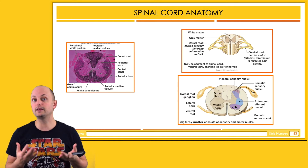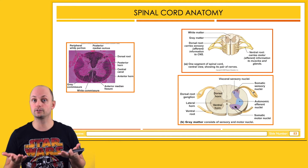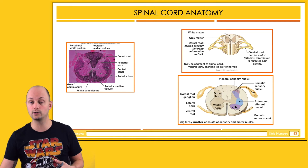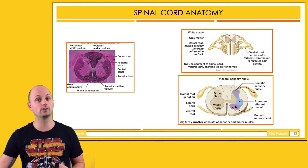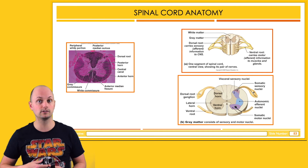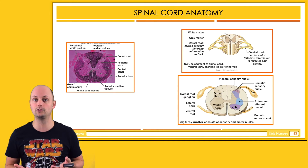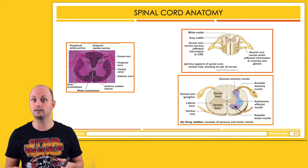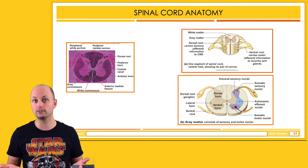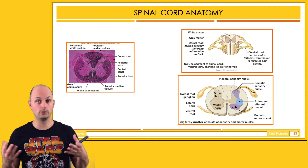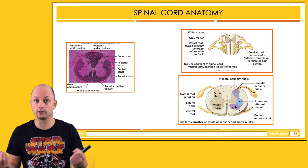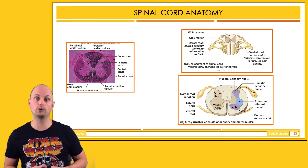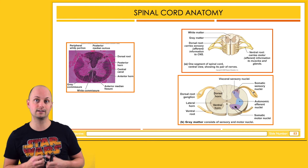This makes sense if you think about the spinal cord's job. It's continuously having neurons leaving to go out to the tissues and having neurons come in to bring sensory information into the central nervous system. That's the reason why the white matter is on the outside — all of those nerves have to be myelinated in order to carry those signals over long distances.